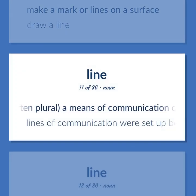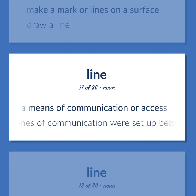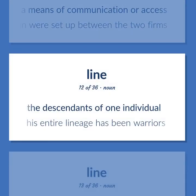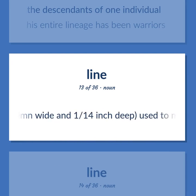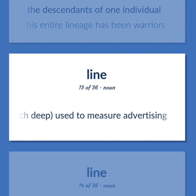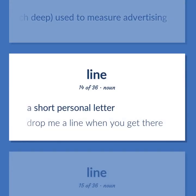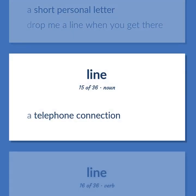Line: often plural, a means of communication or access. Example: lines of communication were set up between the two firms. The descendants of one individual. Example: his entire lineage has been warriors. Space for one line of print, one column wide and one fourteenth inch deep, used to measure advertising. A short personal letter. Example: drop me a line when you get there.